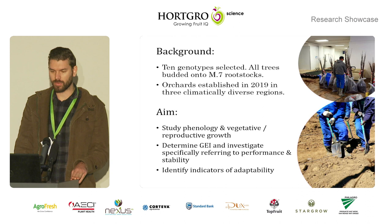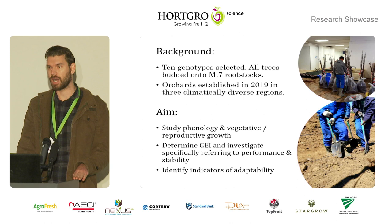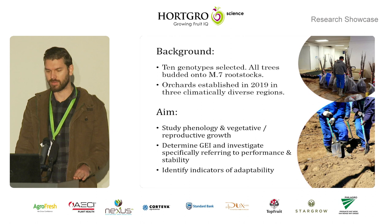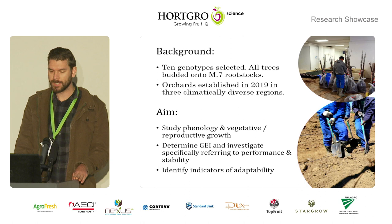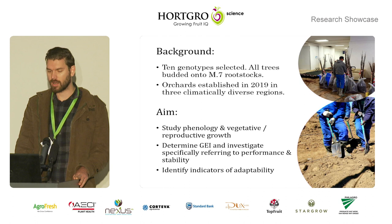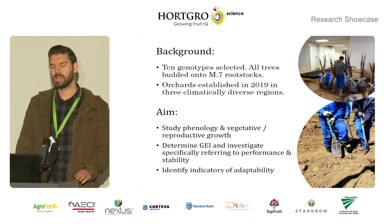For the background — this is just for the apples, but we've also got pears — we've chosen 10 genotypes ranging from low chilling to high chilling. For the pears it's a little more difficult in terms of chilling, but they range from early flowering to later flowering. The apples are all budded on M7 rootstocks and the pears are all on BP1. The apples were established in 2019 and the pears came on a little bit later in 2022. We are looking at these 10 genotypes in three different environments, specifically looking at phenology as well as vegetative and reproductive growth.